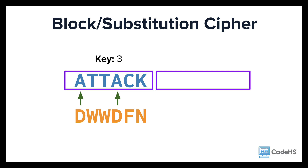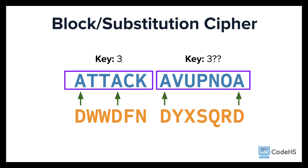Let's say someone has figured out the first block. They've noticed that all the d's in the first word make sense if you change them to a's — this would mean the key is 3. However, applying the same process to the second word doesn't seem to help. A key of 3 doesn't decrypt this part of the message.